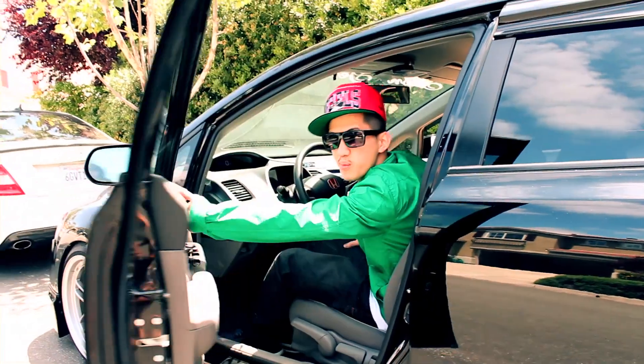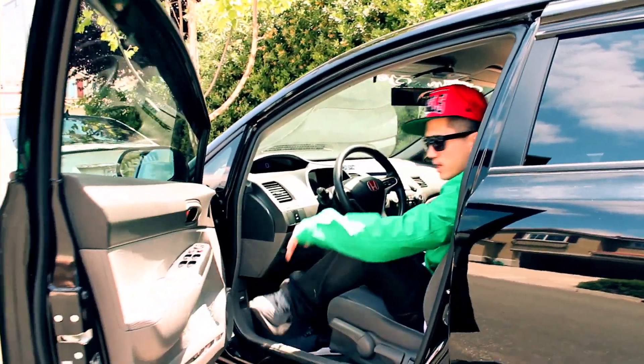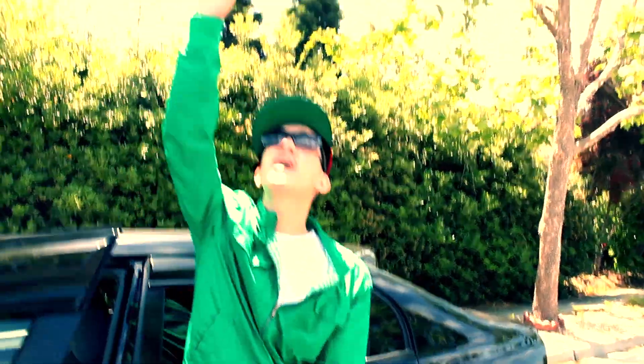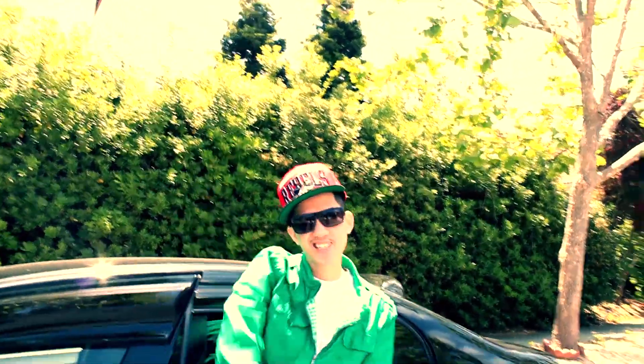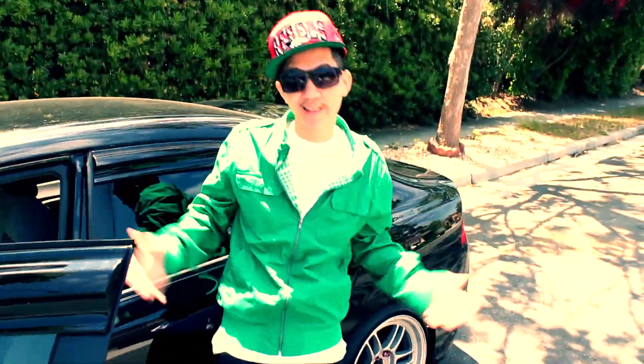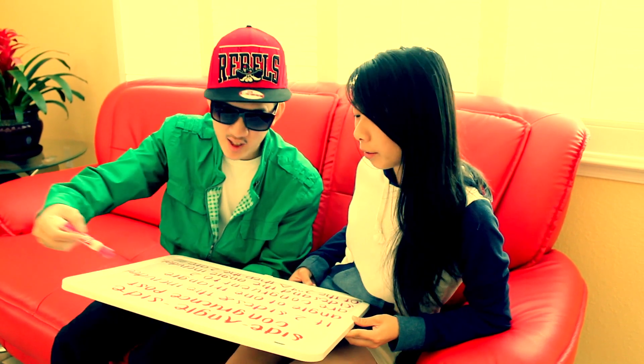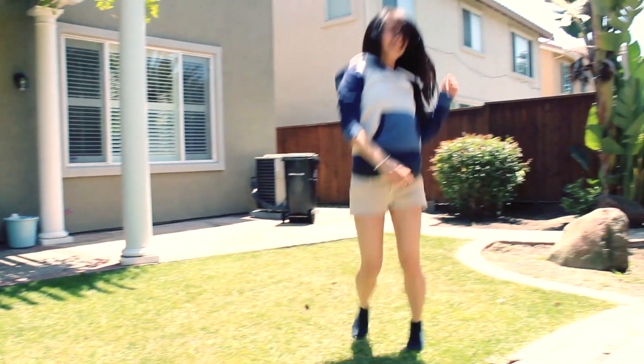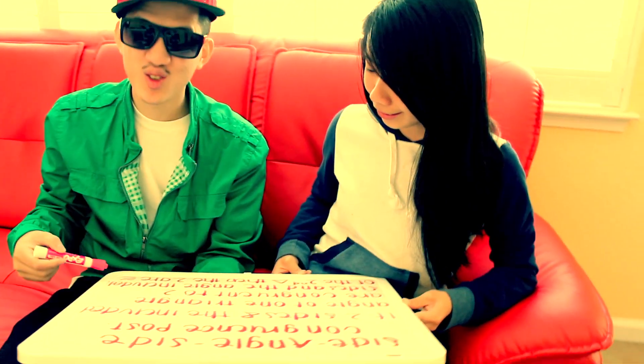This might be a little bit random, but I'm so young and I'm handsome. If you agree, please put your hands up. Life's a test and I got all the answers. Side-angle-side congruence postulate: if two sides and an included angle of one triangle are congruent to two sides and an included angle of a second triangle, then the two triangles are congruent.